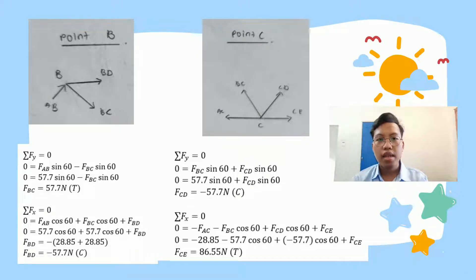At point C we have four forces: force AC, force BC, force CD and force CE. For force Y, we can use force BC and force CD because they have Y components. Zero equals force BC sin 60 plus force CD sin 60. We already have the value of force BC which is 57.7, and we will get force CD equals negative 57.7 N compression. Next, sum of forces for X. We must use all forces because all forces have X direction. We substitute into the equation and get negative force AC minus force BC cos 60 plus force CD cos 60 plus force CE. We get force CE equals 86.55 N, and this is tension.